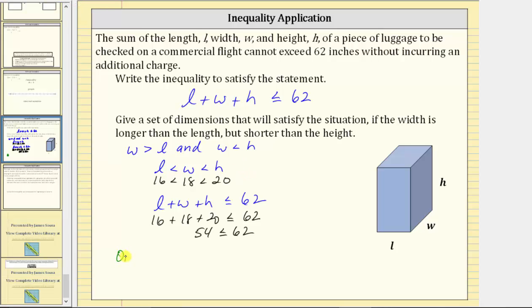So one set of possible dimensions would be length equals 16 inches, width equals 18 inches, height equals 20 inches. Of course there are many other possible dimensions that will satisfy the inequalities. I hope you found this helpful.